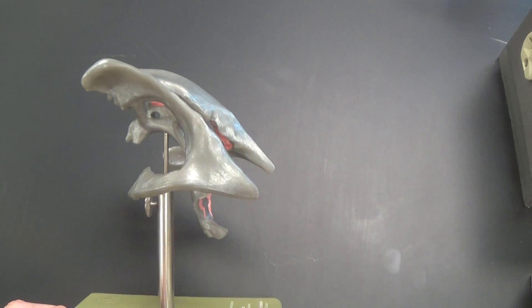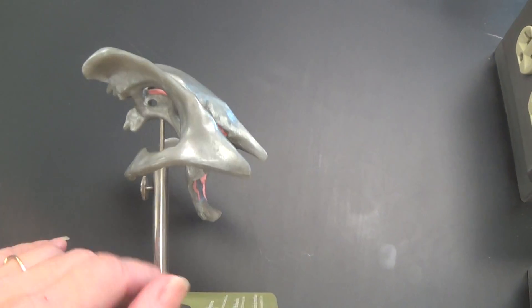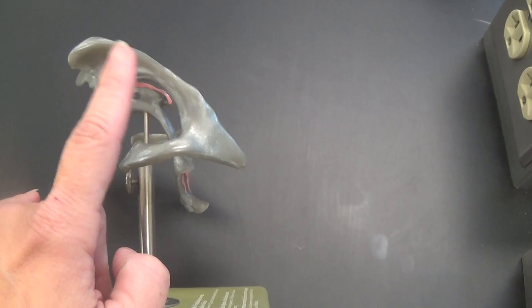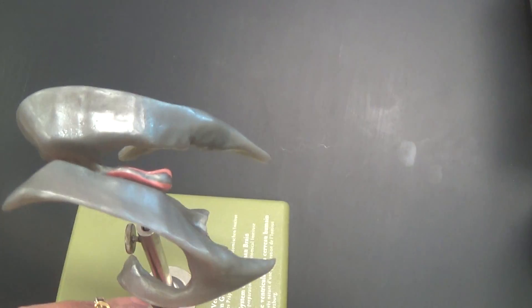The first ventricles are the lateral ventricles. And that's what you're seeing right through here. One of the lateral ventricles, the other is on the other side.